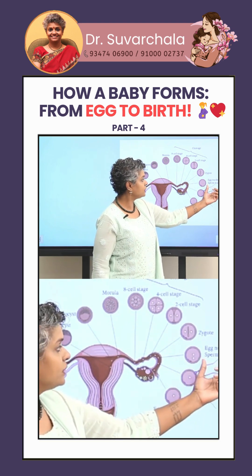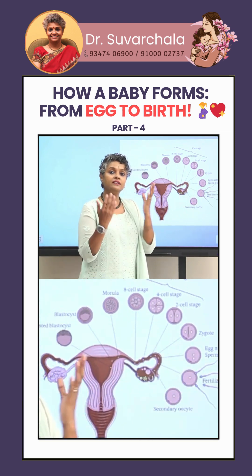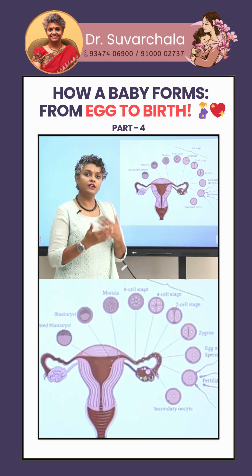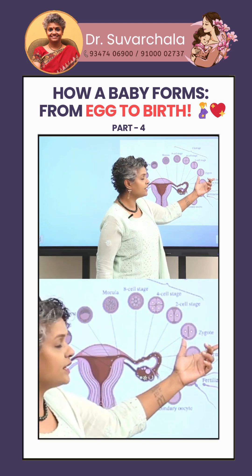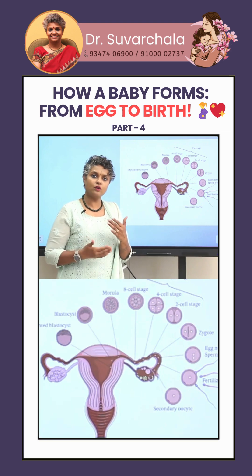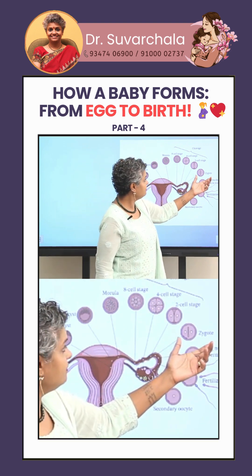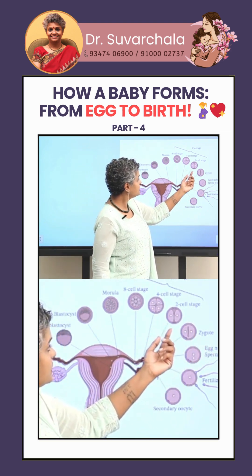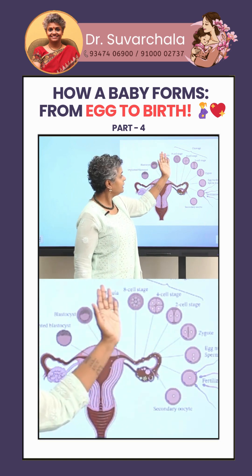The egg nucleus and the sperm nucleus are released and an individual is formed. Next is the zygote, which is the formation of cells inside the egg itself after fertilization. Then the two-cell stage, four-cell, eight-cell, and morula.